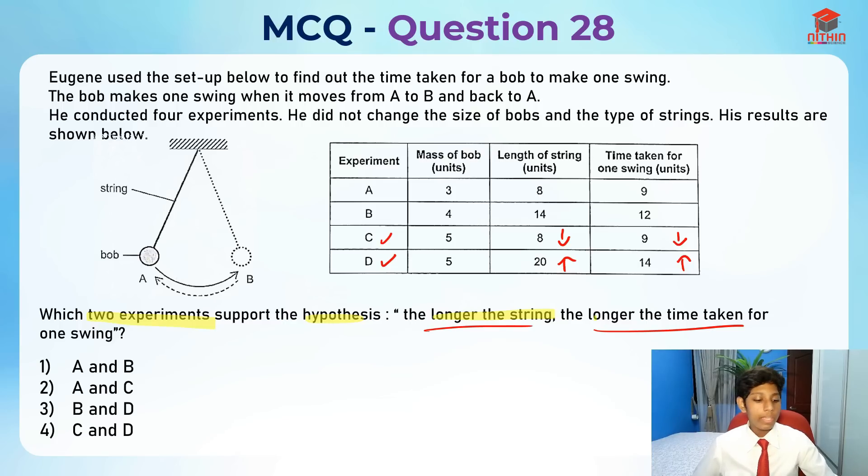So C and D are the right two experiments. It can't be A and B, B and C, D and A, anything like that. So A and D is wrong, A and C is wrong, B and D is wrong, and C and D is correct. So the answer is option 4.